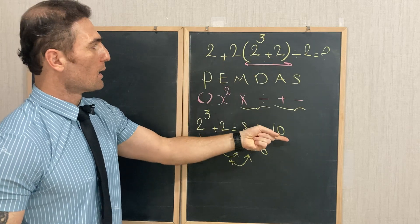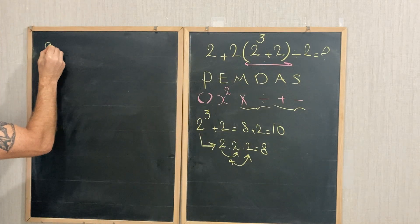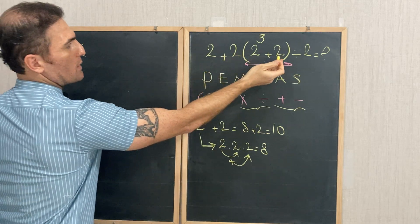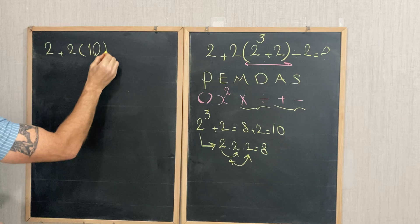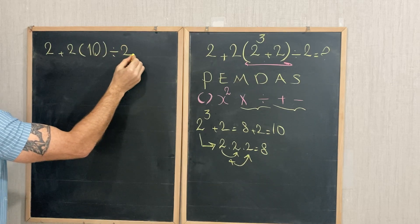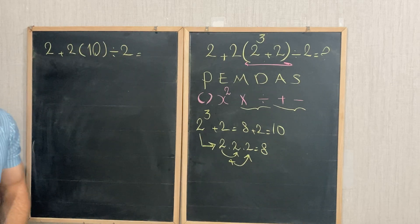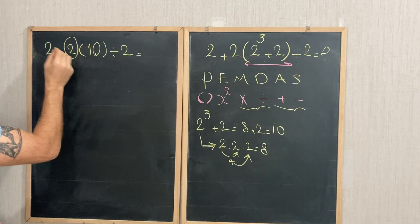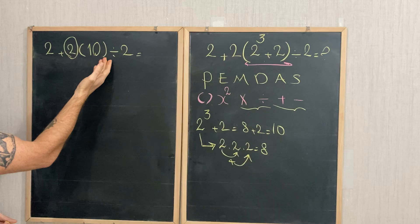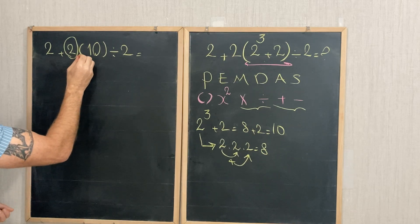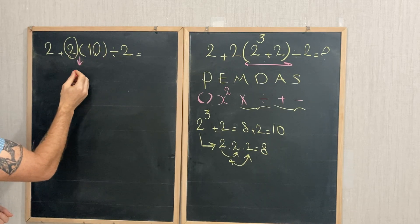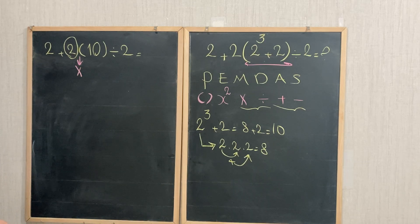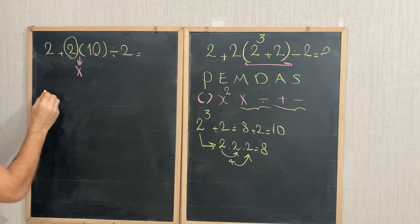Let me rewrite the expression. We have 2 + 2(10) ÷ 2. Before the next step, note that a number next to a set of parentheses means multiplication — so 2(10) means 2 × 10. Rewriting, we get: 2 + 2 × 10 ÷ 2.